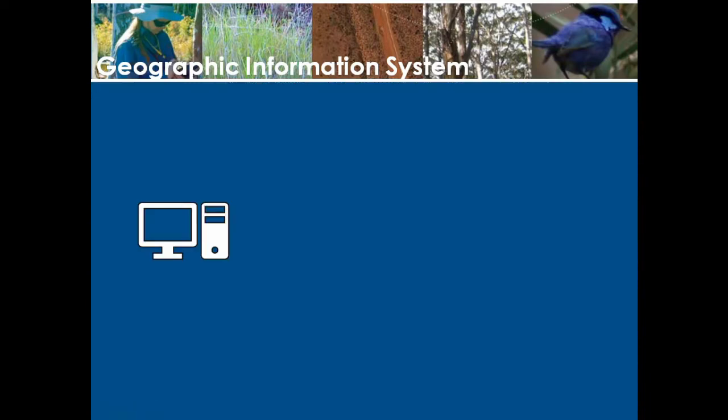A GIS can take the form of a desktop, mobile, or web application, or all of the above. The type of GIS this training course will focus on is on the desktop side. Desktop GIS software is used by scientists, planners, and engineers to bring different themes of information together to visualize and help them make more informed decisions.